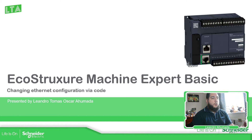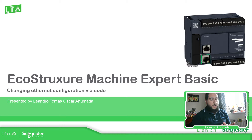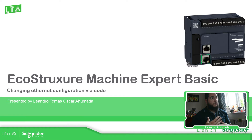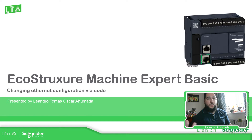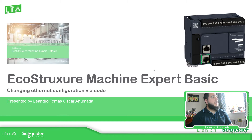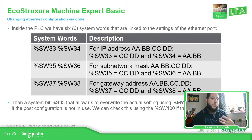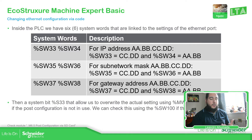In order to change the configuration of our Ethernet port on the PLC, we need to use some internal system words and system bits. We may need to make some calculations, especially if you want to share those values with an HMI. Also, if you have a post configuration on the Ethernet port, you cannot do this, so I'm going to show you how to disable or delete the post configuration on the controller.